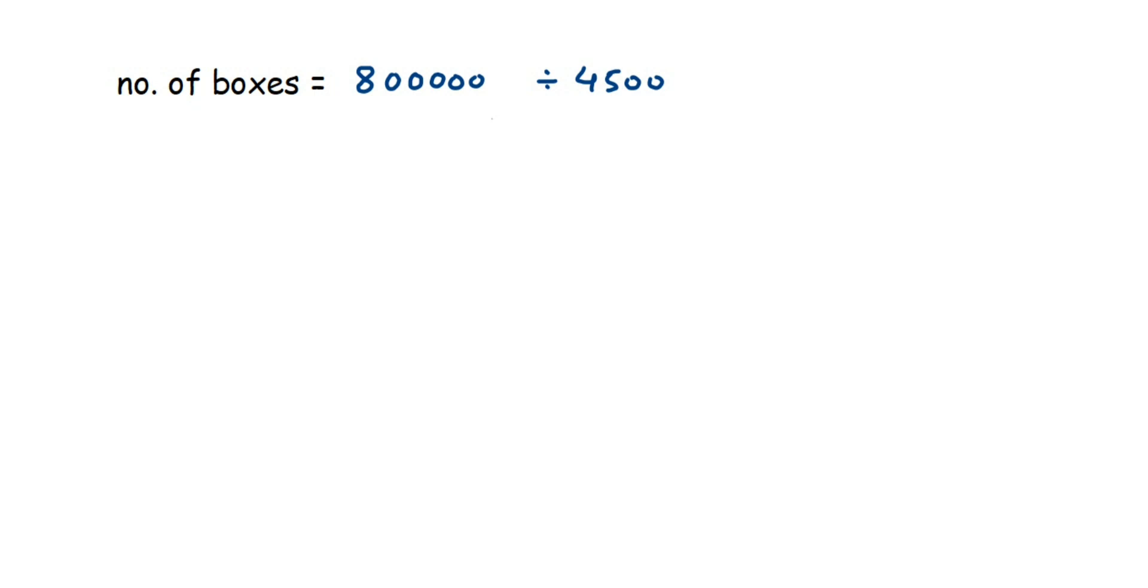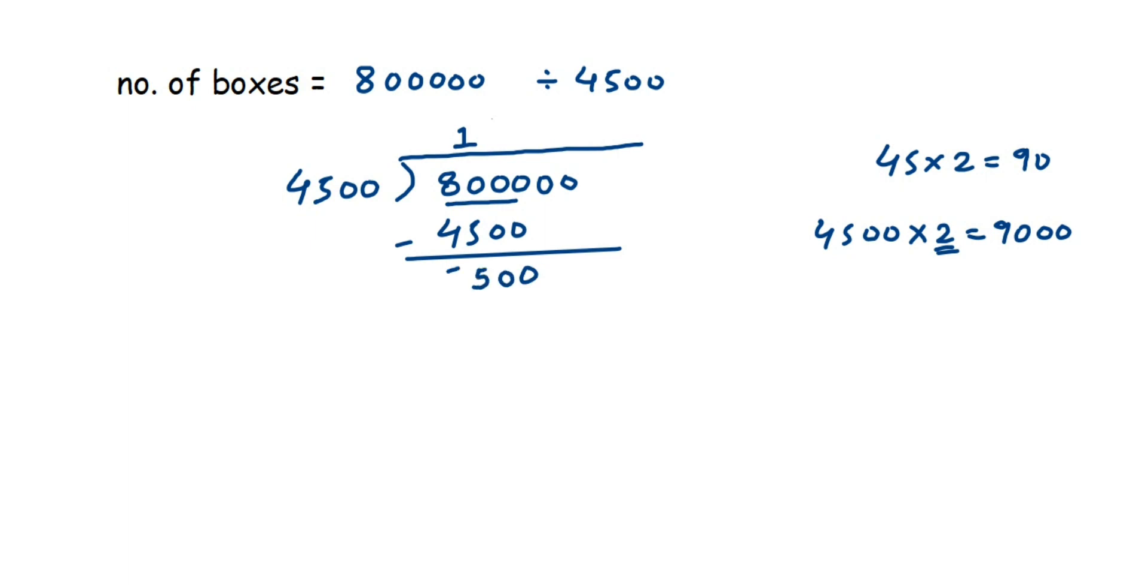I'm not going to use the cancellation method because I have to check how many fits here. So let's divide: 4500 will be the divisor and 800,000 will be the dividend. First, we're going to take the first four digits, which is 8000. We know that 45 multiplied by 2 is 90, so 4500 multiplied by 2 will be 9000. I will not take 2 because it's going to exceed 8000, so let's stick to 1. 4500 once is 4500. Let's subtract it, so we get 3500. Now let's drop this one zero here, so we have 35,000.